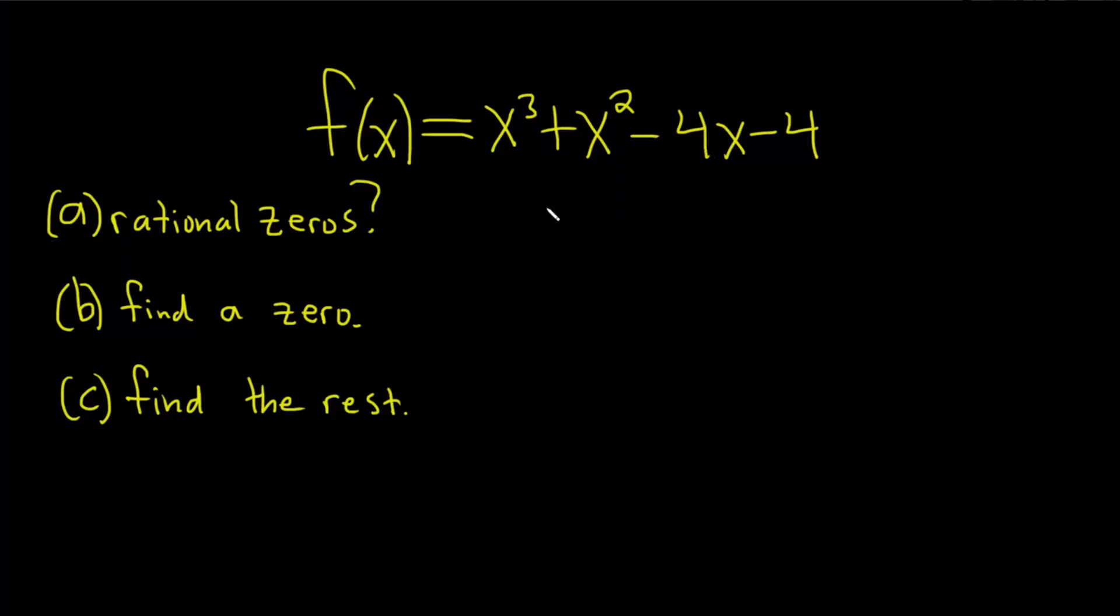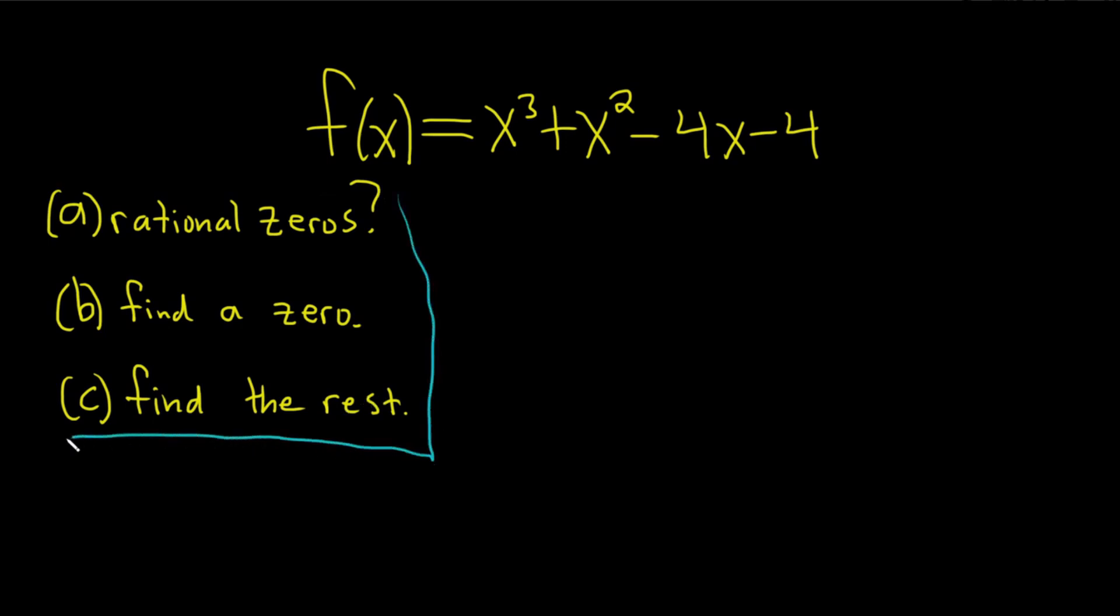Hi, everyone. In this problem, we have a polynomial function. We have a three-part question. So part A wants us to find the rational zeros. Part B wants us to find a zero by testing the rational zeros. And then part C wants us to find the rest using our previous answers. So let's go ahead and follow the directions and just go through it fairly easily.